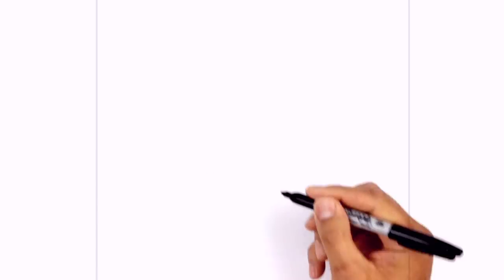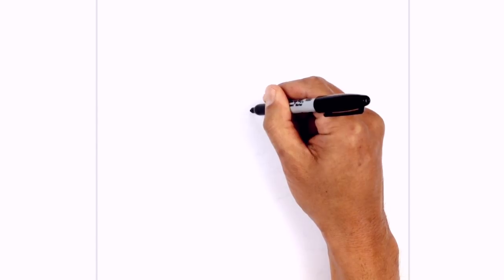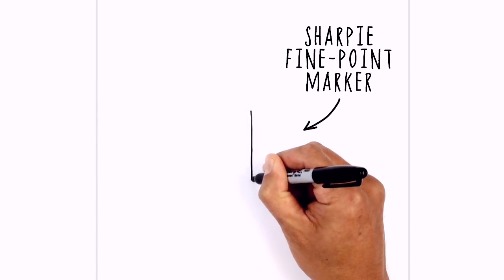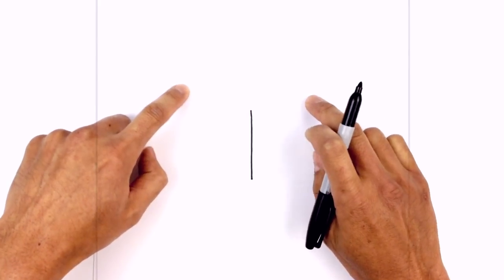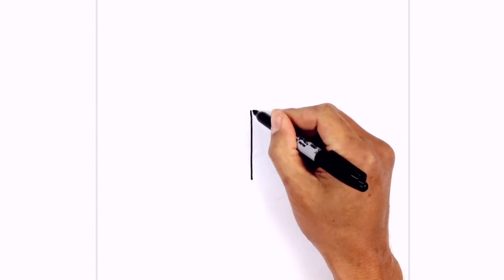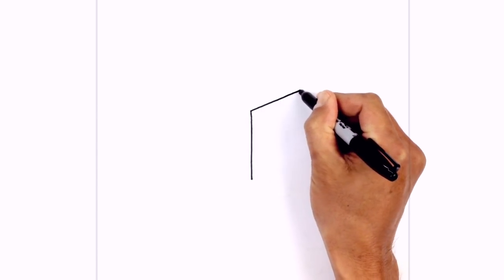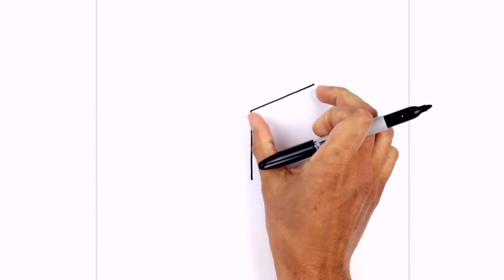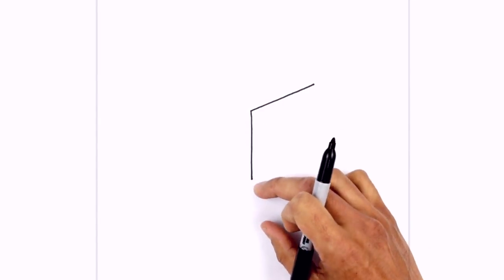I'm going to get started in the center of our page. I'm going to draw a straight line coming down the center, starting from the top and pulling the pen down towards us. From here I'm going to draw two angled lines from the top going out on the left and on the right. Starting with the right side, we're going to angle up with a straight line, making sure it's roughly the same length as the center line going up and down.